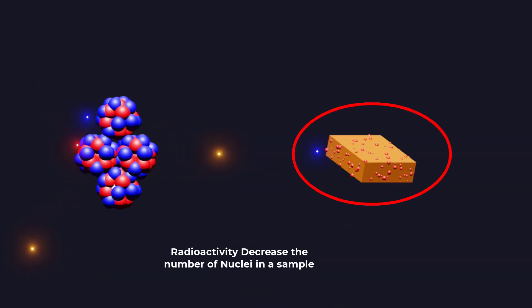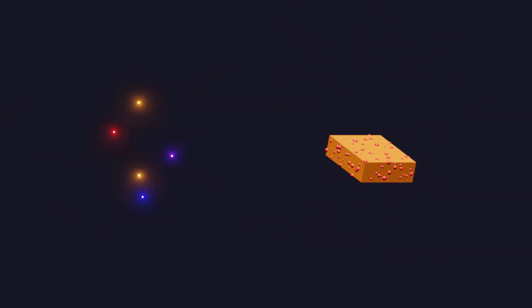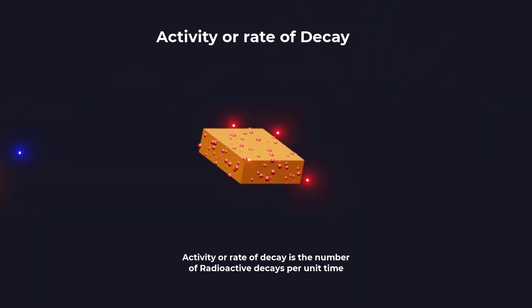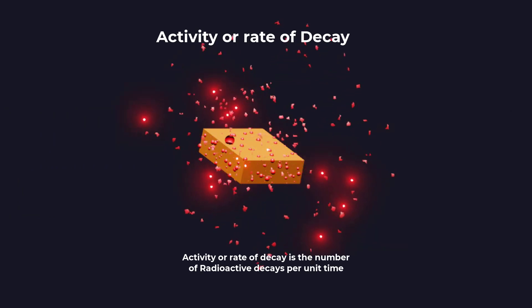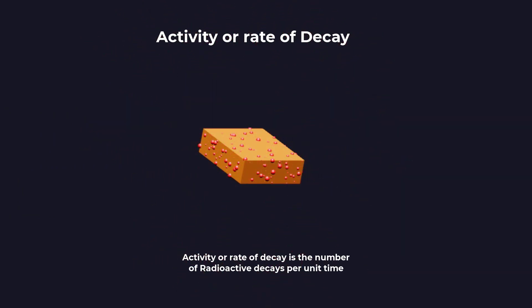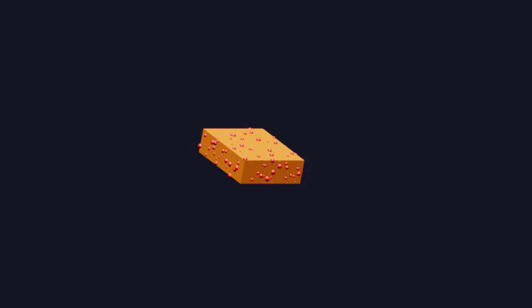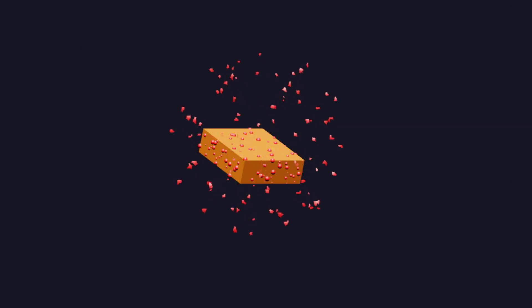When a radioactive material decays, it reduces the number of nuclei in a sample. The number of radioactive decays per unit time in a radioactive sample is called activity. Activity can be measured in units of becquerels or curies. 1 becquerel is defined as 1 decay per second.